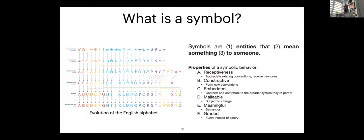One interesting definition of a symbol is that they are entities that mean something to someone. It's a very practical definition you can work with and use to define symbolic behavior. On top of the symbols, which have some properties, a symbolic behavior should exhibit receptiveness — appreciating conventions and receiving new ones. It should be constructive for new conventions. It should be embedded — part of a broader system and contributing to it. It should be subject to change, as we can see in the evolution of the alphabet.